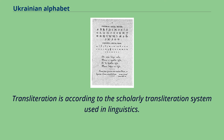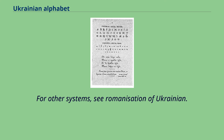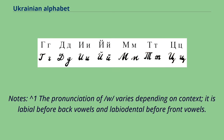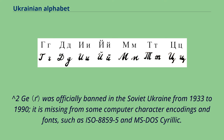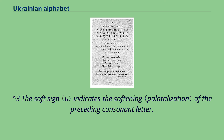Transliteration is according to the scholarly transliteration system used in linguistics. The pronunciation of /w/ varies depending on context: it is labial before back vowels and labiodental before front vowels, and is also vocalized to /u/ in the syllable coda. The letter ge was officially banned in Soviet Ukraine from 1933 to 1990, and is missing from some computer character encodings and fonts such as ISO 8859-5 and MS-DOS Cyrillic.